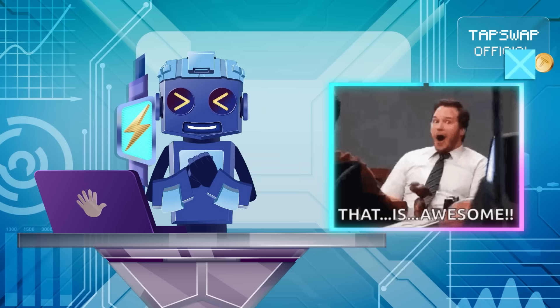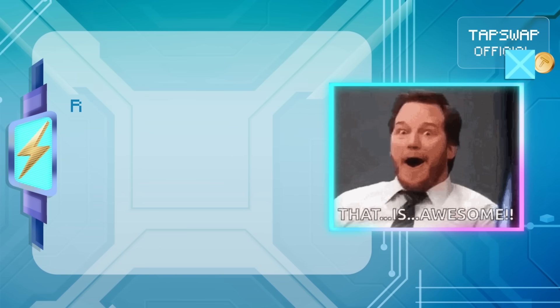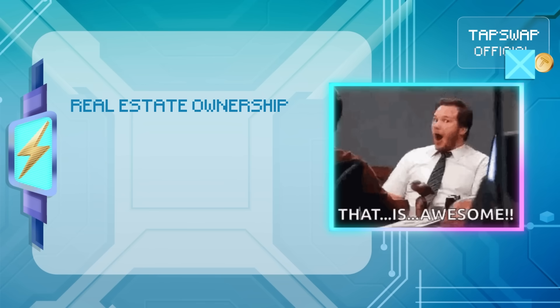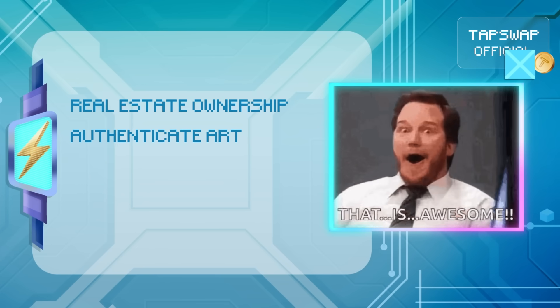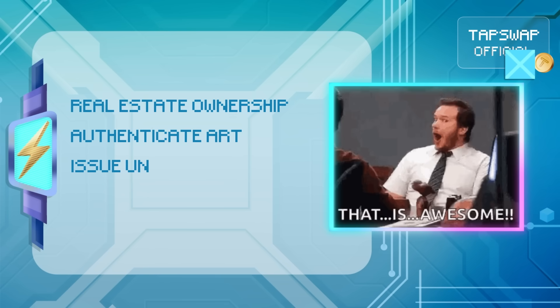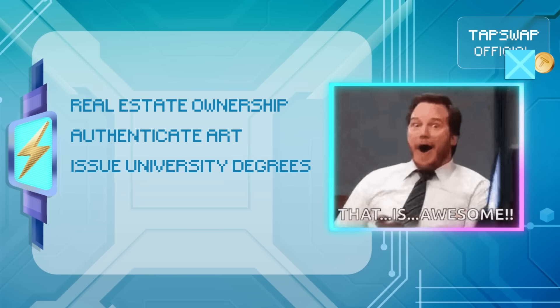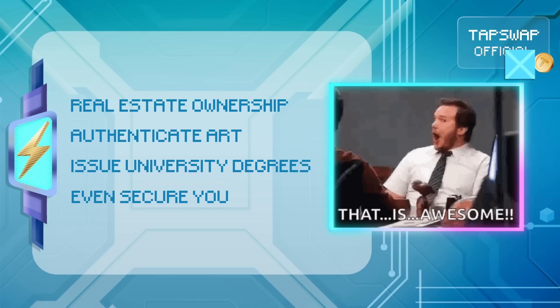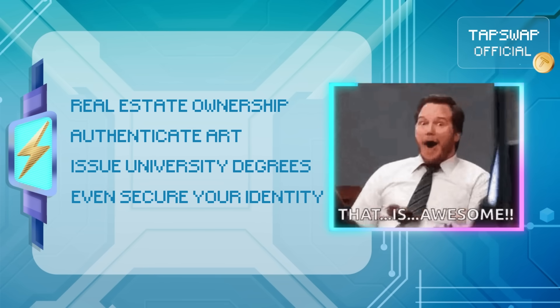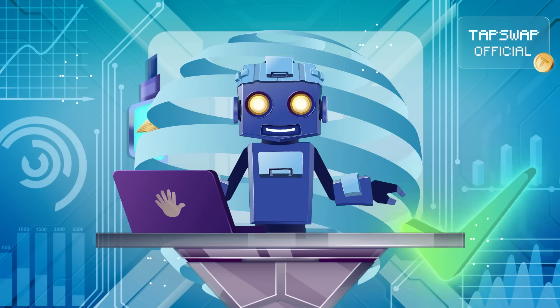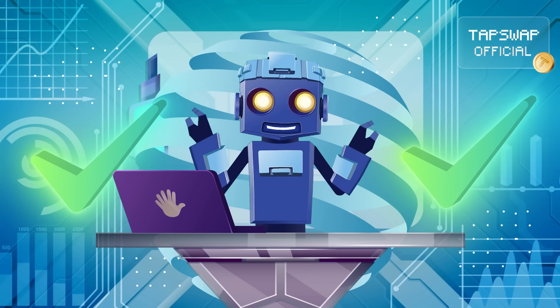On-chain systems could be used to manage real estate ownership, authenticate art, issue university degrees, or even secure your identity. Everything is verifiable and reliable.